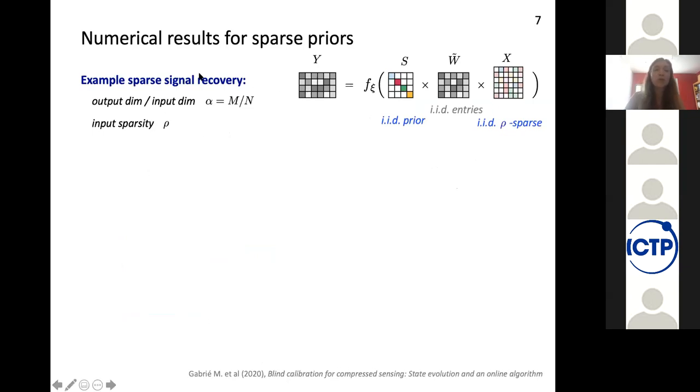So to look at in practice how these mean field methods for solving the inference problem are performing on blind calibration, we can focus on the case of sparse recovery, which means that while inferring S and X, we are going to consider signals X that are row sparse, that have only a fraction row of entries that are non-zero.